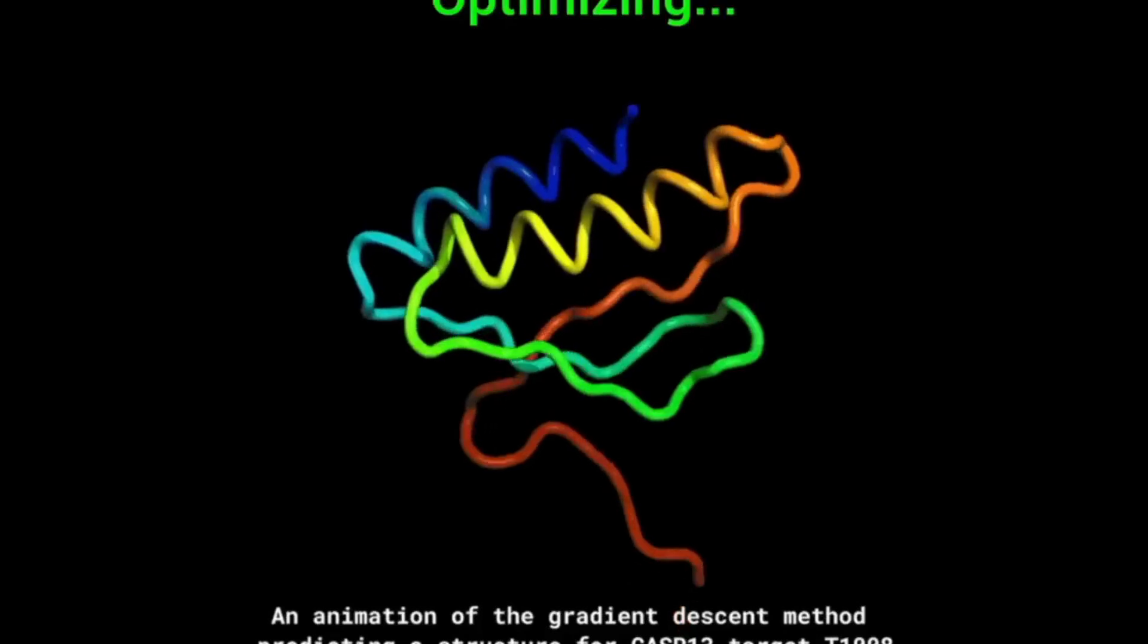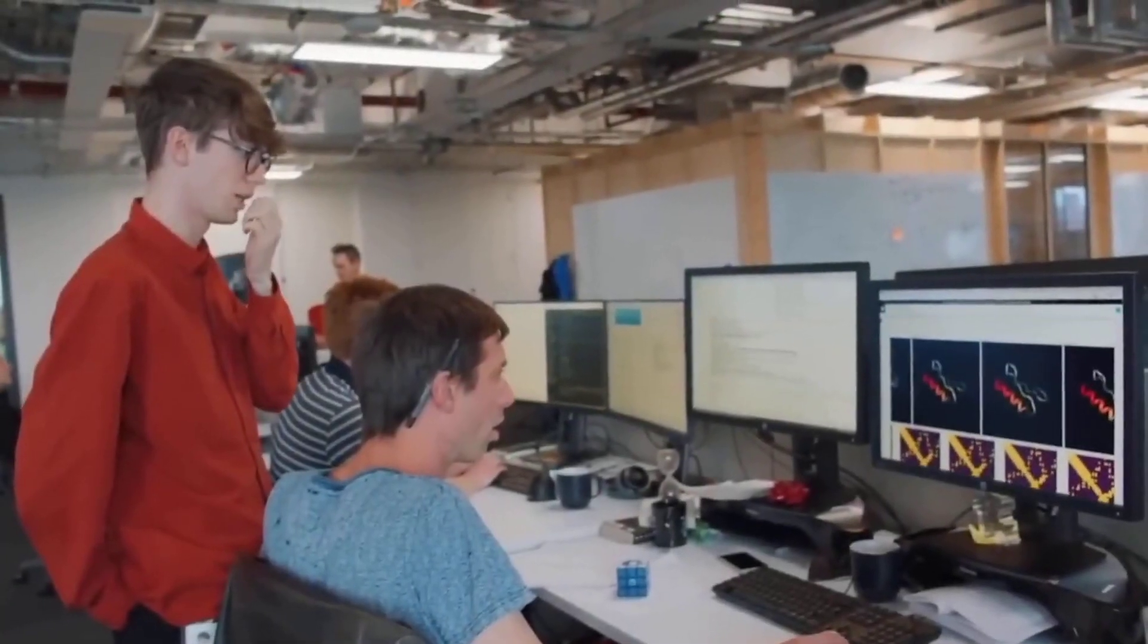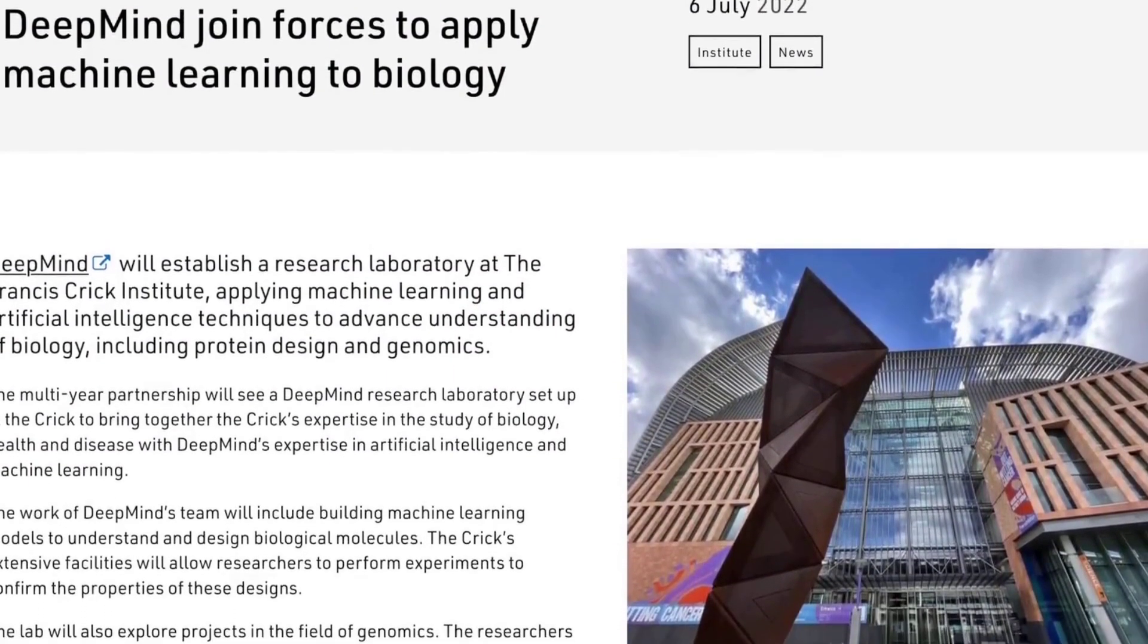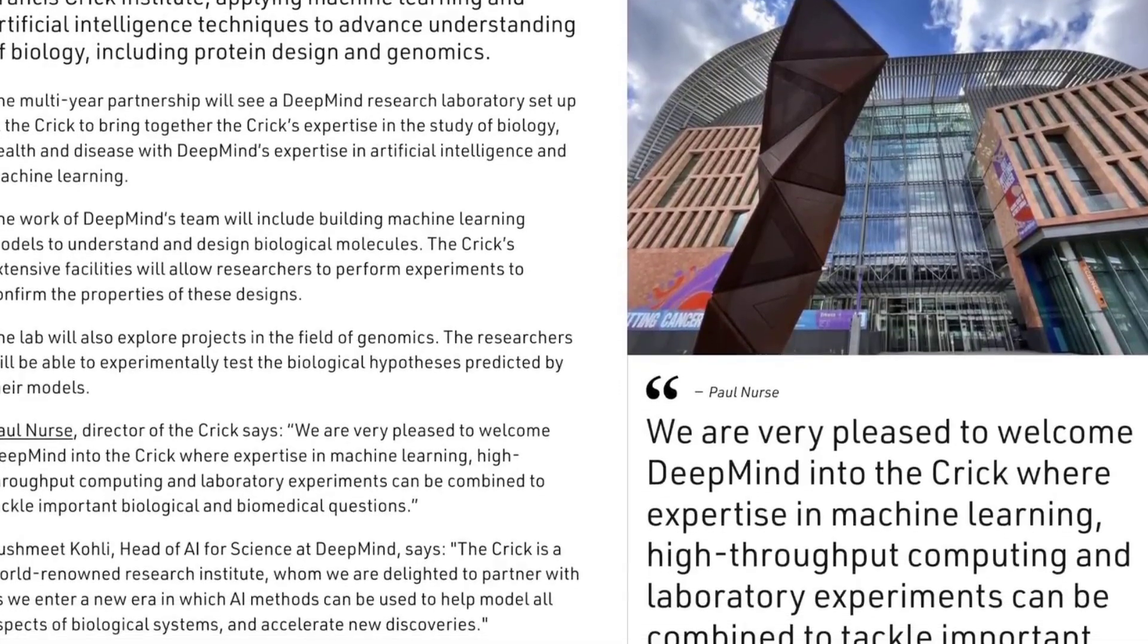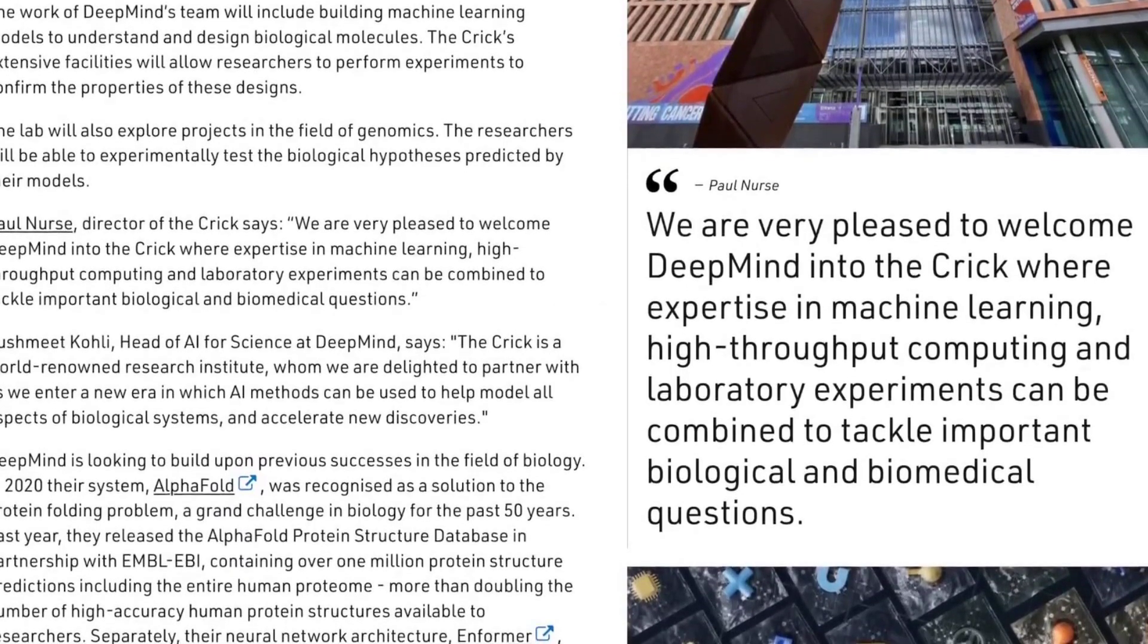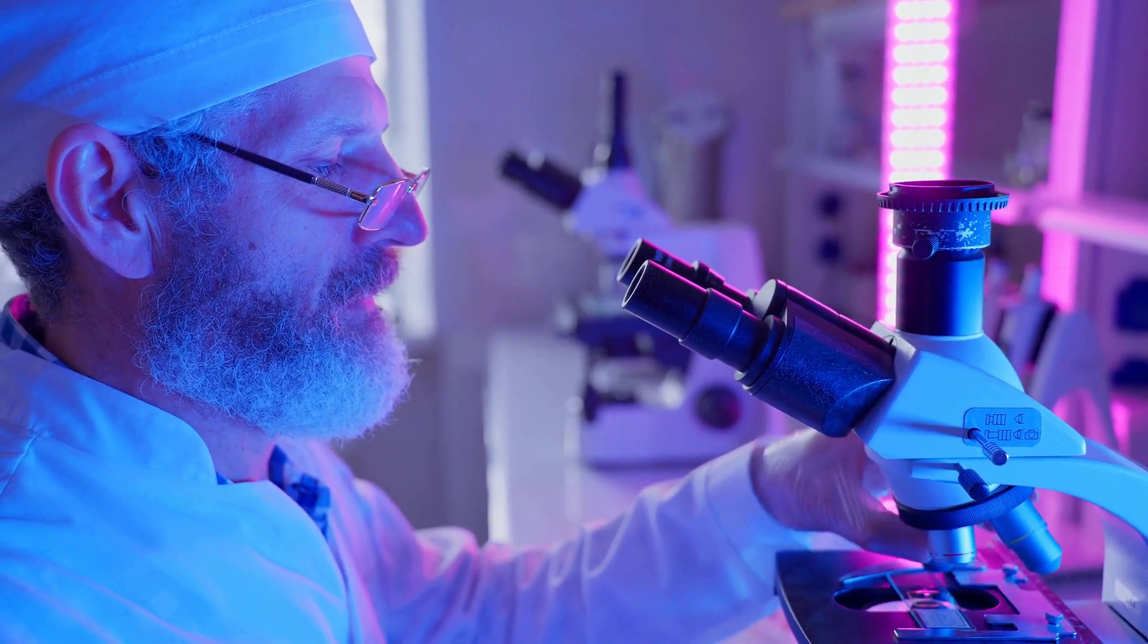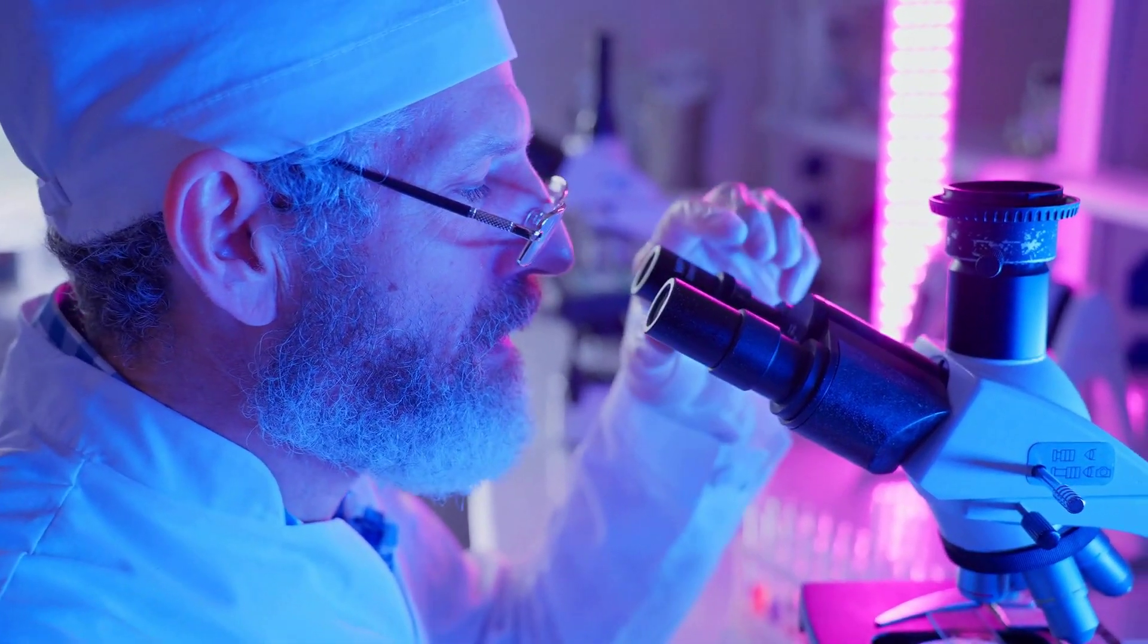Despite its power, AlphaFold has limitations. Its predictions are only as good as its training data, which was derived from the Protein Data Bank, PDB. That means proteins lacking homologues or stable crystalline forms are poorly represented. Intrinsic disorder, membrane dynamics, post-translational modifications, these remain challenging. AlphaFold tends to predict the most likely static conformation, not the full range of biologically relevant states. And while its code is open, the training weights are fixed. Fine-tuning for edge cases or niche applications isn't trivial.